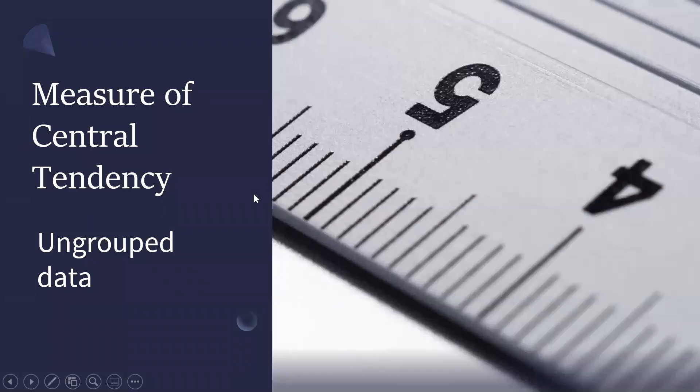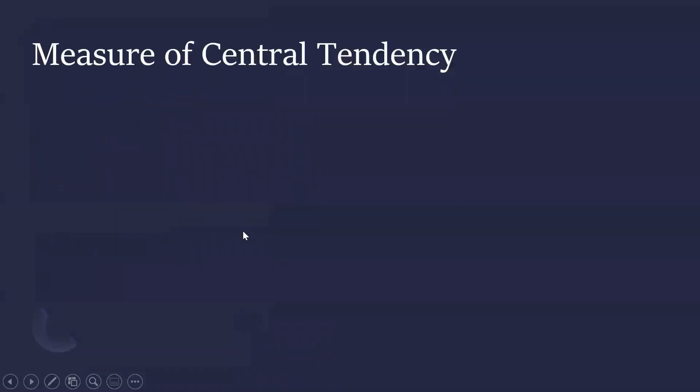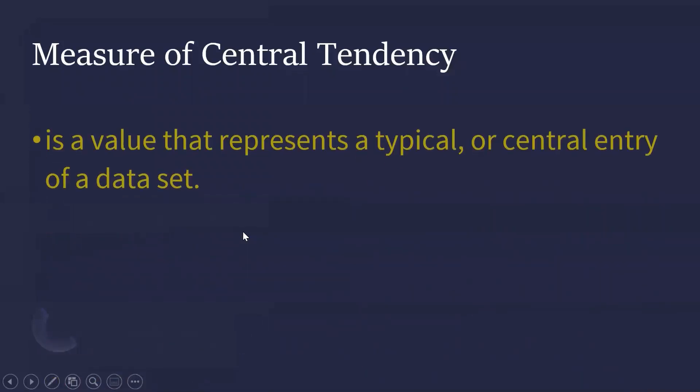Now, let's talk about measure of central tendency for ungrouped data. Measure of central tendency is a value that represents a typical or central entry of a data set. The most commonly used measures of central tendency are the mean, the median, and the mode.